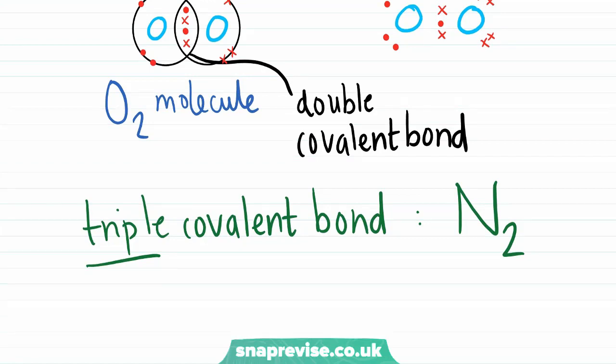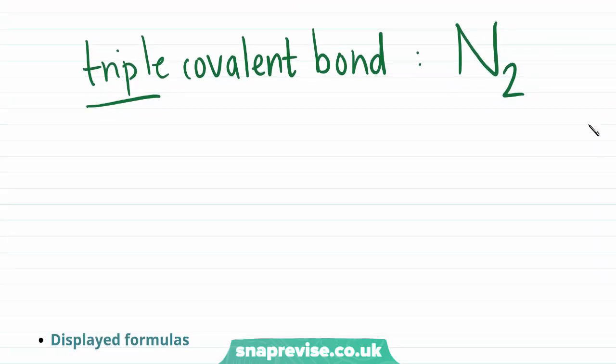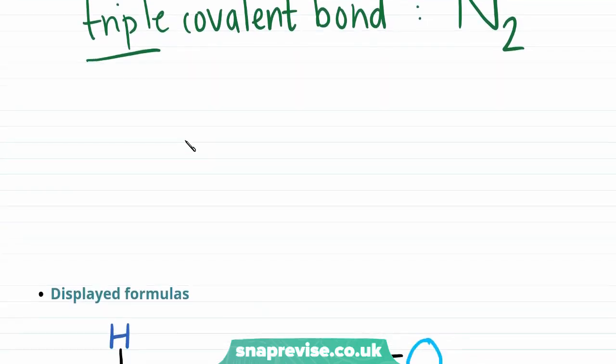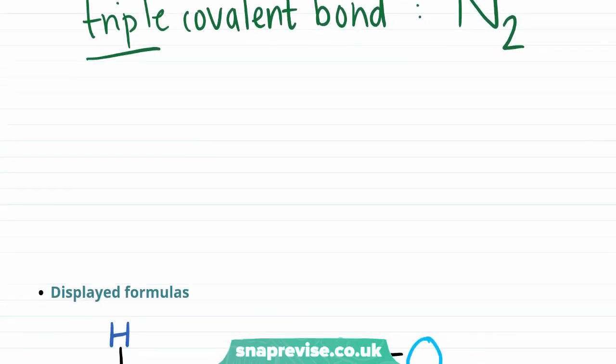So, now we've looked at dot and cross diagrams, we can think about another way in order to represent covalent bonds, which is displayed formulas. If you've seen our videos on ionic bonding, you'll already know the pros and cons of a dot and cross diagram.